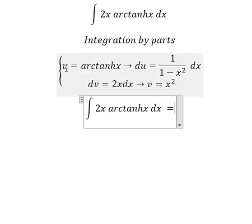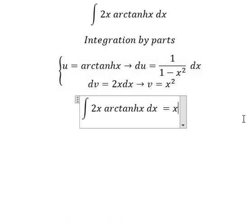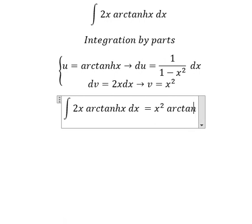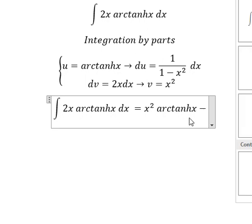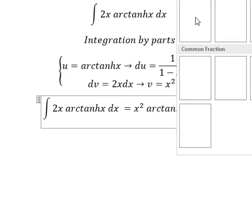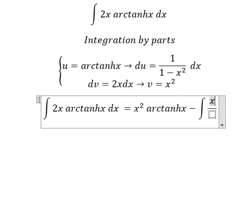So we have u multiply by v, minus the integration of v times du. So we have the integration 2x arctanh x dx equals x squared arctanh x minus the integral of x squared over 1 minus x squared dx.